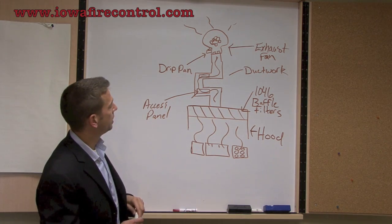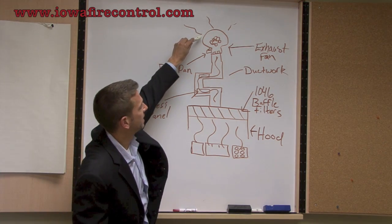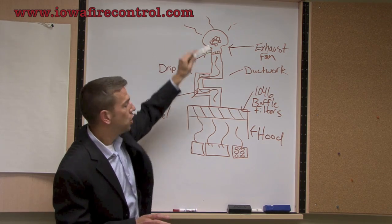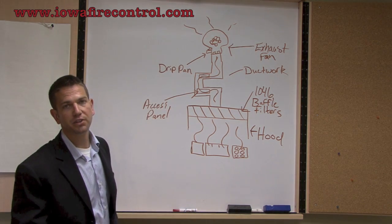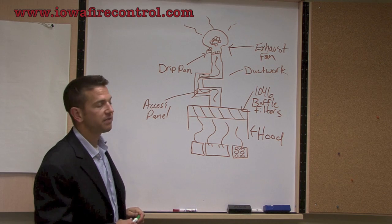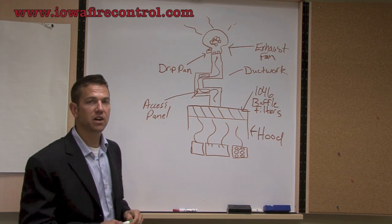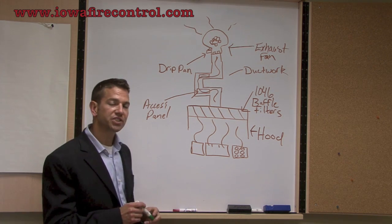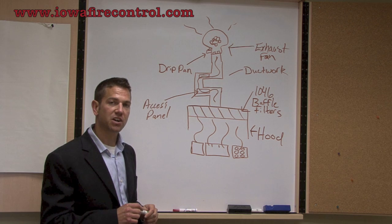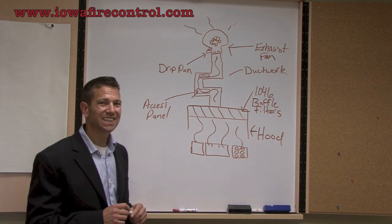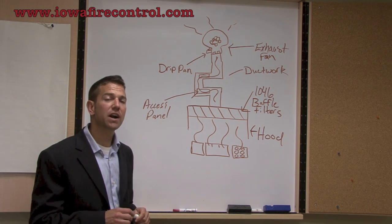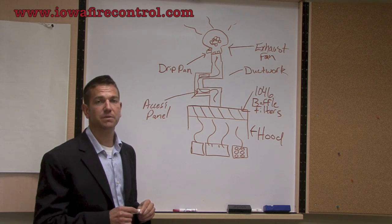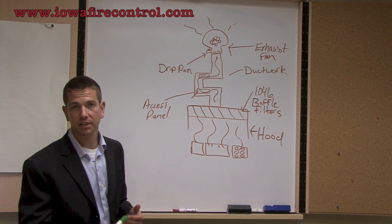Many people don't know that the draw comes from the exhaust fan, which is either on the roof or on the side of the building. In some of the older style kitchen exhausts, what we end up seeing is inline exhaust fans, and we try not to do very much work with an inline exhaust fan because it ends up being headaches for us and for the customer.